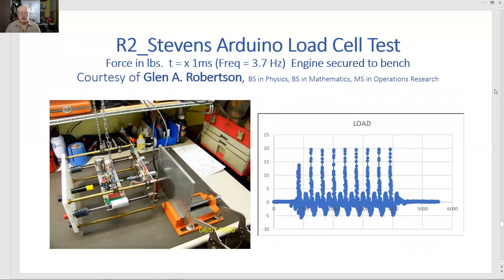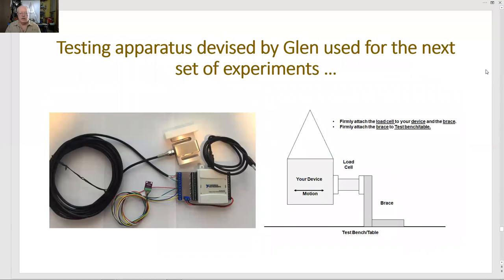This was our earlier load cell test. Engine secured to the bench through the load cell down here. Bolted to this plate, which is anchored with a pony vise and clamped down to the bench. And the engine is free hanging, but it can't swing. It's bolted to the bench. And we are getting about 20 pounds of impulse at close to 4 cycles per second, 4 hertz. This is a testing apparatus devised by Glenn used for the next set of experiments.